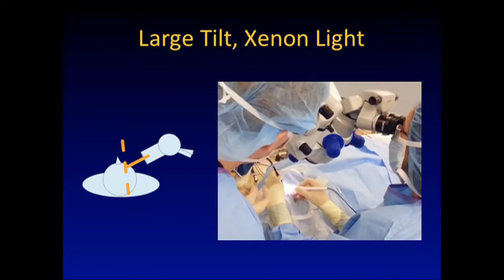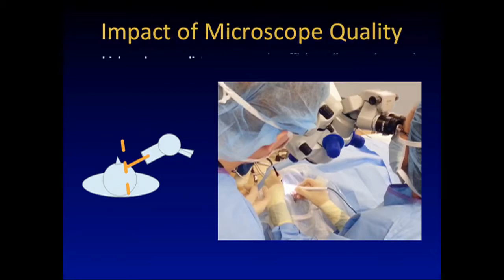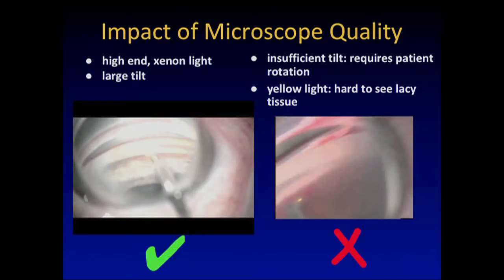The large tilt is key. Many patients we operate on are elderly and don't have a highly mobile neck, so you want something that tilts well, and you want to be using xenon light. This is the difference right here — on the left side you see a microscope with a fairly crisp xenon light, and on the right side you see another microscope that does not.